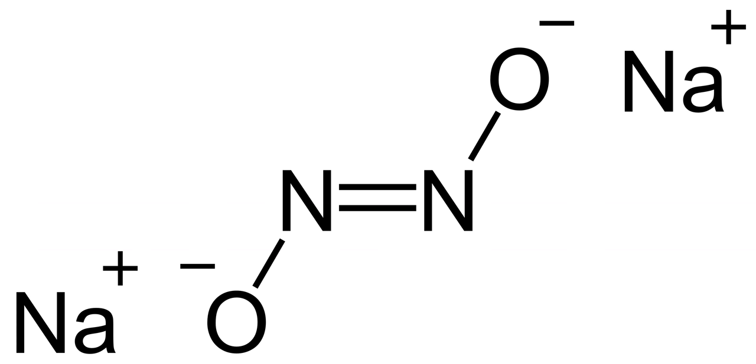Sodium hyponitrite is a solid ionic compound with formula sodium nitride O2 or Na+2 N2O2 2-. There are cis and trans forms of the hyponitrite ion N2O2 2-. The trans form is more common, but the cis form can be obtained too, and it is more reactive than the trans form.